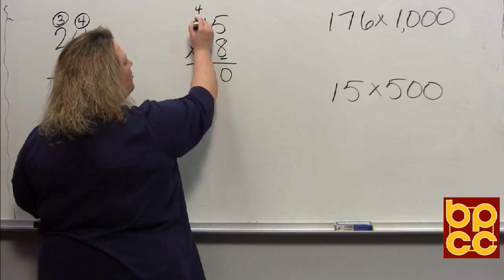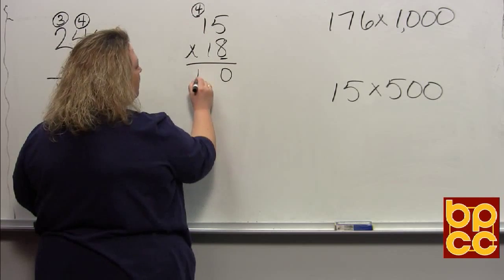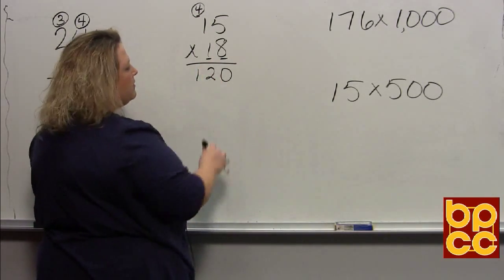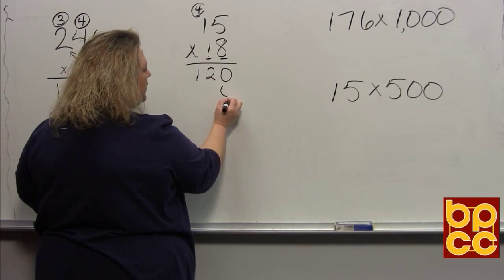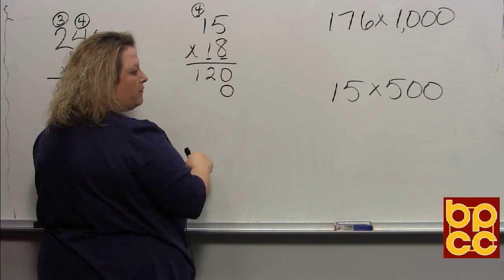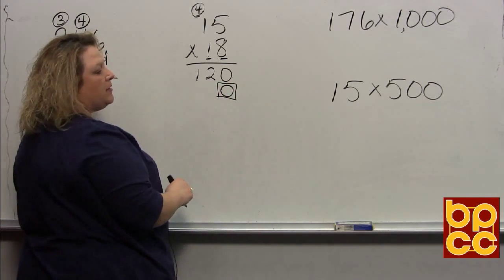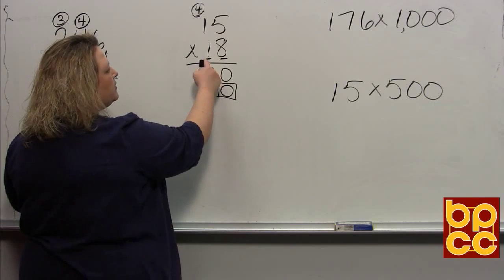Now when you go to multiply the next digit, the 1, since the 1 is in the tens place, we must move over. So we're going to put a 0 for a placeholder right here in the ones place and move over to the tens group.